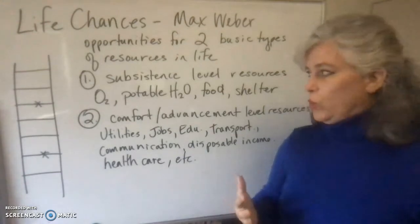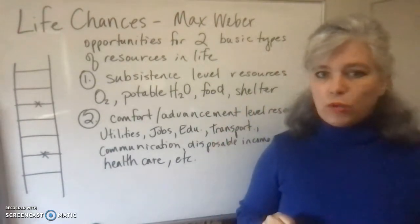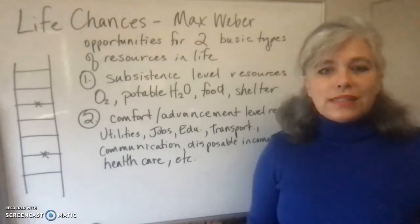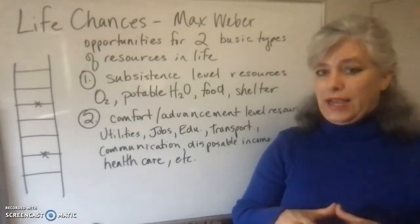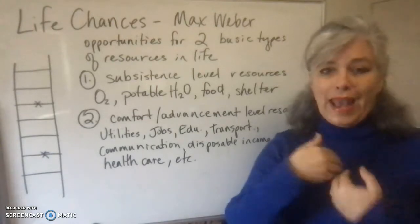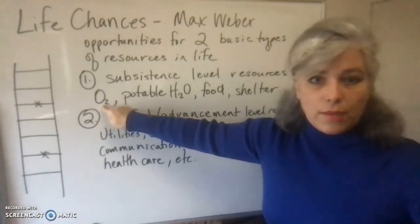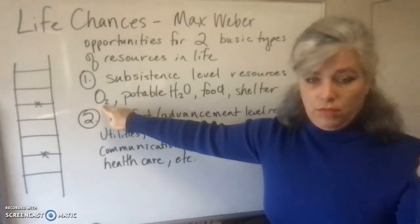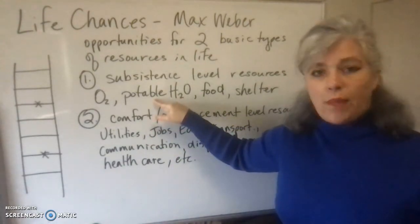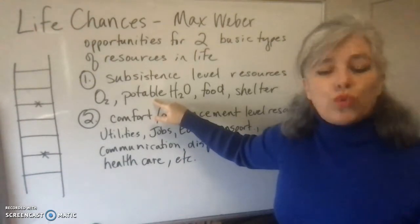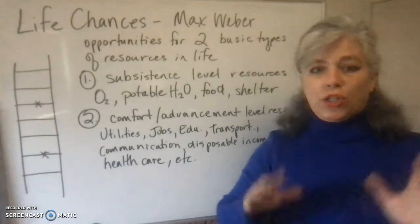We all as human beings need subsistence level stuff just to survive. Here's a really good college-level vocabulary word: subsistence. Subsistence is to survive from day to day — to subsist is to survive. So what is necessary for the human animal to survive? We need oxygen — I've got O2 written up here just to test your chemistry knowledge. We need breathable oxygen that is not contaminated. We need potable water — potable is a good college-level vocabulary word meaning drinkable, not containing anything that would make you sick. In Spanish it's agua potable.